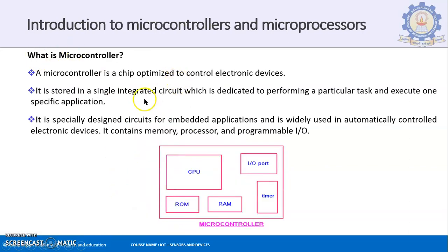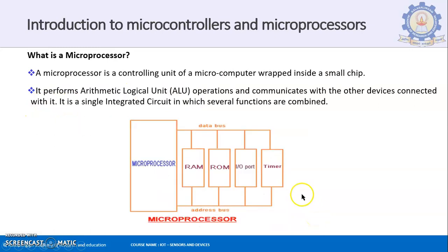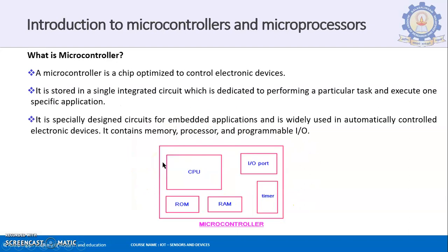So what is a microcontroller? A microcontroller is a chip optimized to control electronic devices. It is stored in a single integrated circuit dedicated to performing a particular task and executing one specific function. As we saw earlier with the microprocessor, it could do any ALU-based task — it is generic in purpose. But when you come to the microcontroller, it is specific in purpose — it can perform a particular task and execute one specific function.